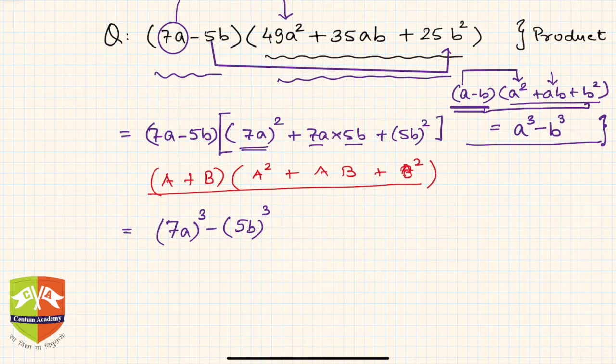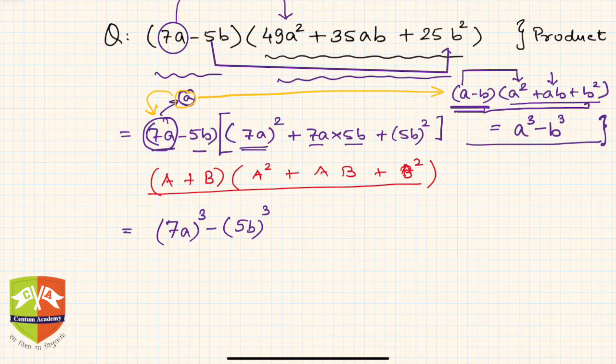Now don't get confused between these a and b here and here - it is 7a and 5b. A and b is symbolic here. A represents whole of this, this is a representation. So this a here is of this identity and this a represents 7a. Similarly, this b represents 5b.